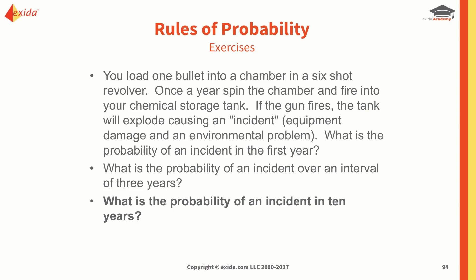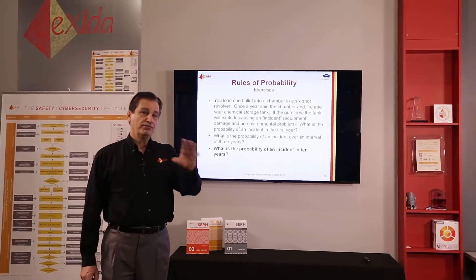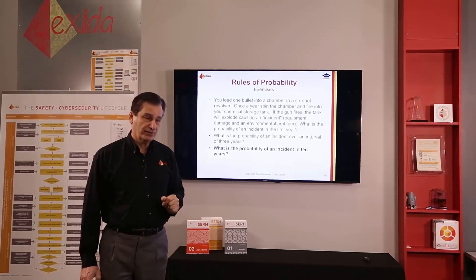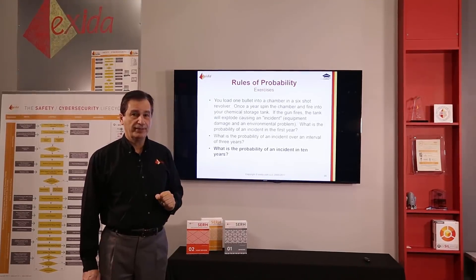Let's look at an example. You load one bullet into a chamber in a six-shot revolver. Once a year you spin the chamber and fire into your chemical storage tank. If the gun fires, the tank will explode causing equipment damage and an environmental problem. What is the probability of an incident in the first year? What is the probability over an interval of three years? And what is the probability in ten years?